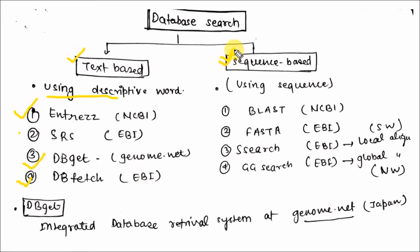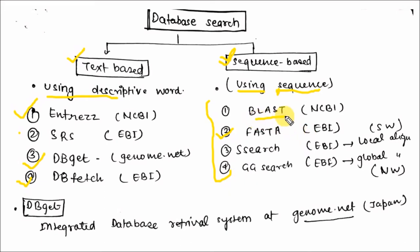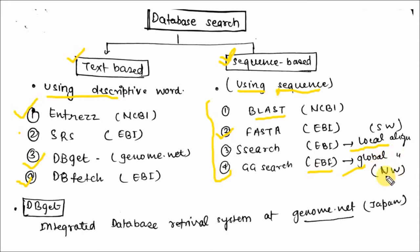For the sequence-based search, using the sequence of the protein or nucleotide, various tools are available like BLAST, FASTA, SSsearch, and GGsearch present at NCBI; FASTA, GGsearch, and SSsearch are also present at EBI. SSsearch is related to local alignment, that is Smith-Waterman alignment, and GGsearch is related to global alignment, that is Needleman-Wunsch alignment.